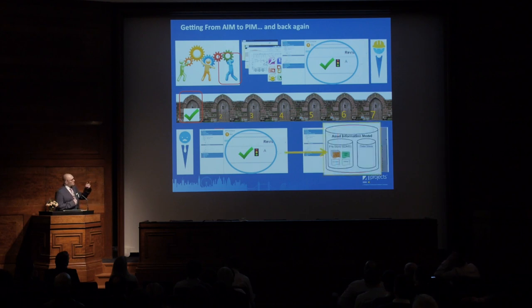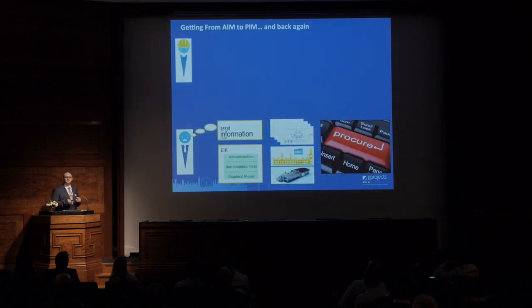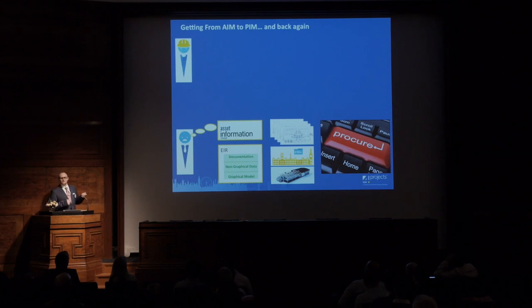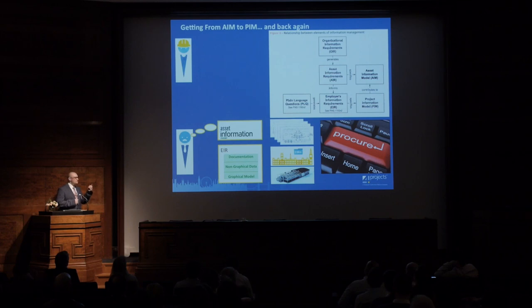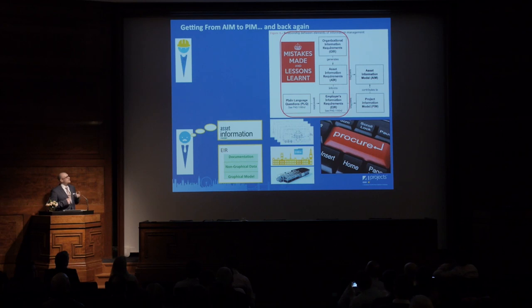We're through stage one — the first stage gate is set. We put the documents in the document store and data in the data store throughout the project, going through stage gates. But the slides are called 'getting from AIM to PIM and back again' — what do we do after a successful project? We don't start from scratch. We have a more knowledgeable client who understands what his EIR looks like, which documents and information matter to him, so he's ready to procure another project without employing a BIM consultant to rewrite the EIR.